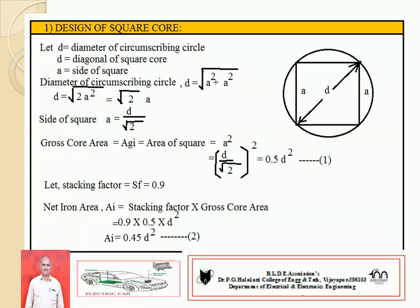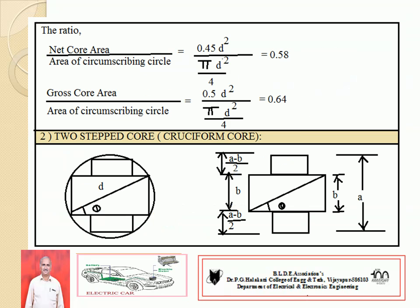The stacking factor is the only difference between gross core area and net iron area. The gross core area is the actual area of the square, and considering the stacking factor, the net iron area is less. Taking the ratio of net core area to area of circumscribing circle: net core area = 0.45 D², area of circumscribing circle = π D² / 4, giving a ratio of 0.58. The ratio of gross core area to area of circumscribing circle is 0.64. This is the beginning of the design.